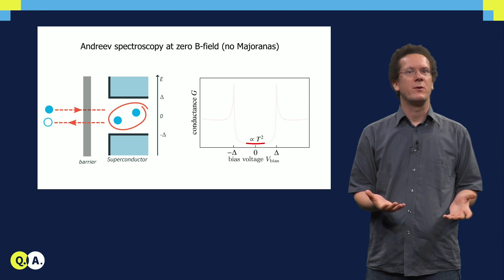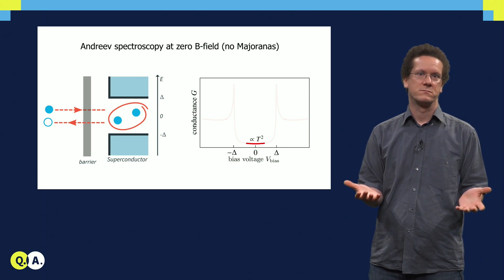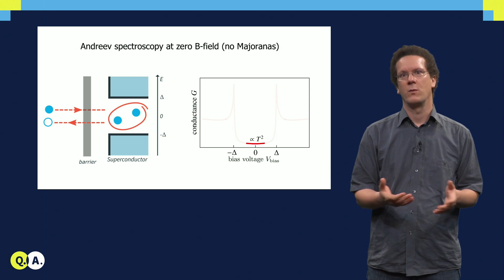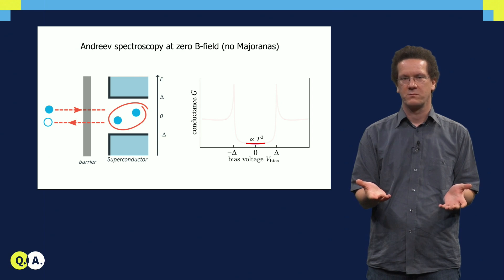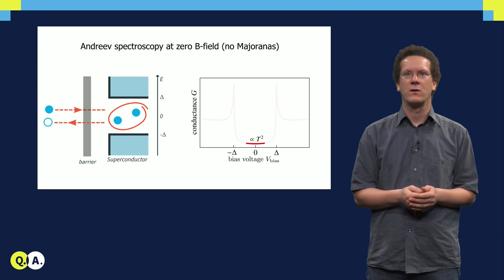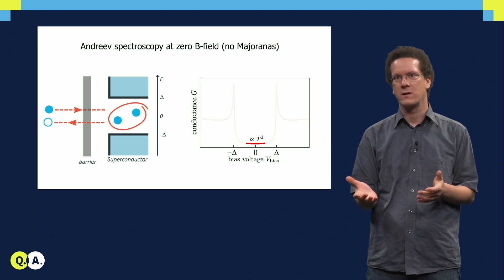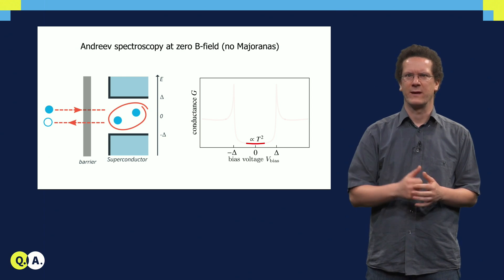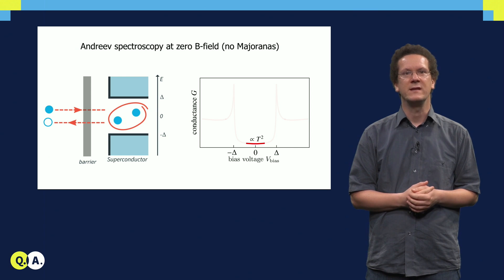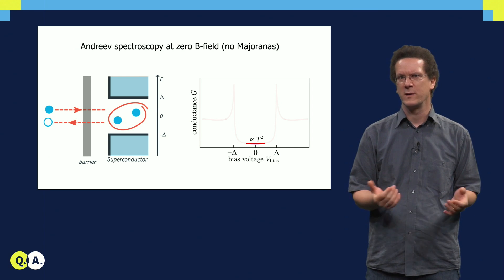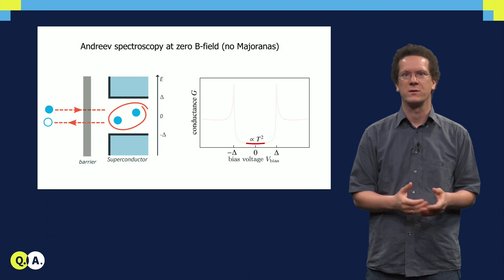Conductance spectroscopy is usually done in the presence of a tunnel barrier in the junction. If the bias voltage is small, then current is carried by Andreev reflection. In this case, the electron has to go through the barrier and the hole has to come back. So there are two tunneling events. Each process has a small tunneling probability t. The total probability of this process is thus proportional to t squared.